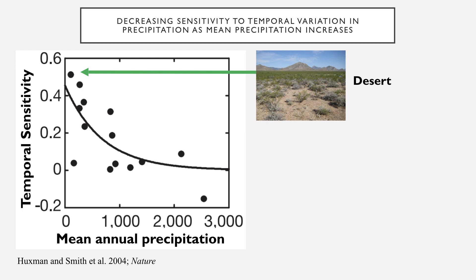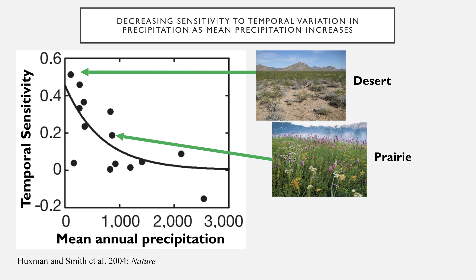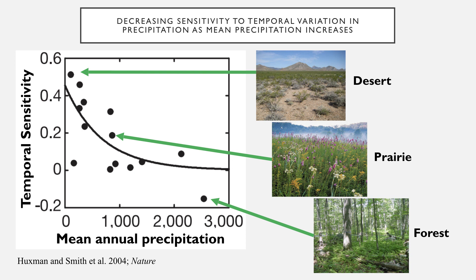However, there are two things to notice about this graph. First, there are only about 14 data points driving this relationship. Second, these data points represent significantly different vegetation types. Starting at the driest region, that data point reflects the sensitivity of a desert ecosystem; in the middle we see a prairie with distinct communities; and at the most mesic point, a deciduous forest. As a consequence, this relationship may simply reflect differences in sensitivity arising due to differences in vegetation structure, but this has not been tested to date.